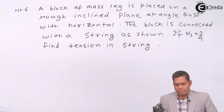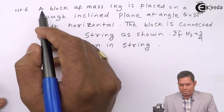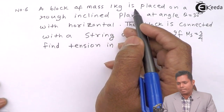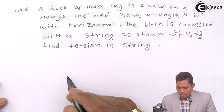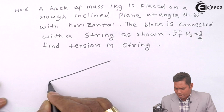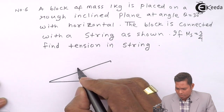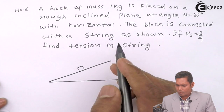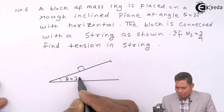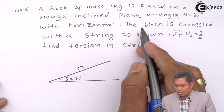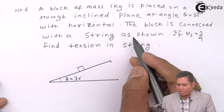Students, let us solve question number 6. The question says that a block of mass 1 kg is placed on a rough inclined plane at an angle theta = 30 degrees with the horizontal. This block is connected with a string as shown.